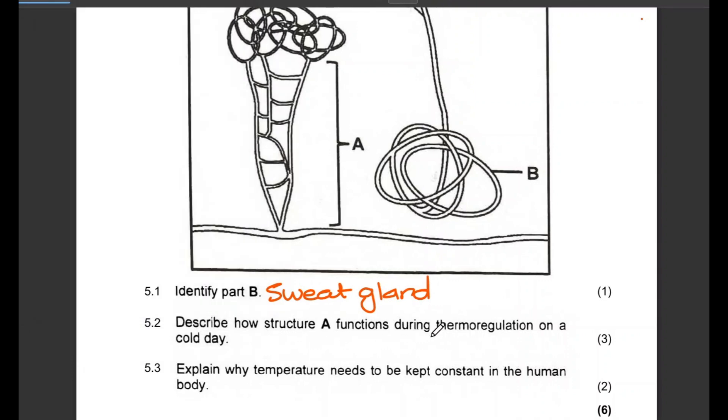Then the second question is asking you to describe how structure A functions during thermoregulation on a cold day. So how does part A function as part of controlling temperature in our bodies on a cold day? Part A is the blood vessels, so what is going to happen there is that it is going to constrict. Vasoconstriction occurs.